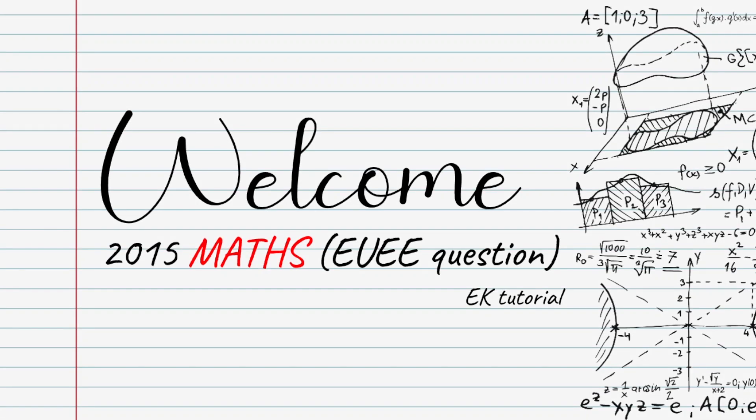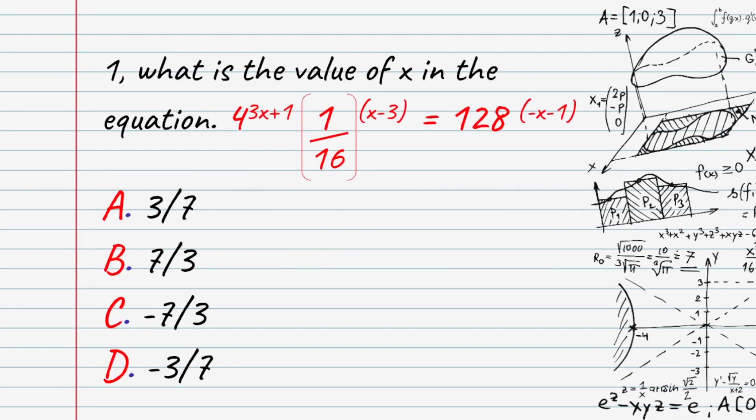Welcome to 2015 Maths — math questions from Akiti Thunaril. What is the value of x in the equation: 4 to the power of 3x plus 1, times 1 over 16 to the power of x minus 3, equals 128 to the power of minus x minus 1?